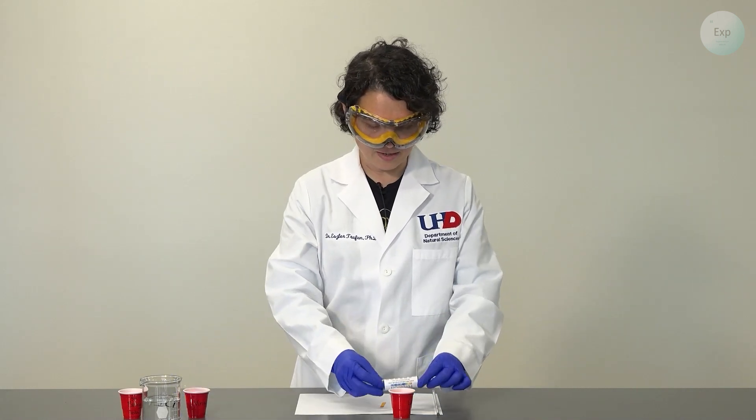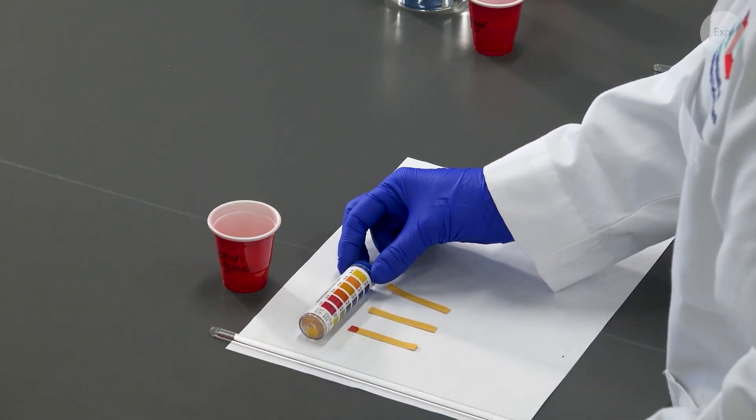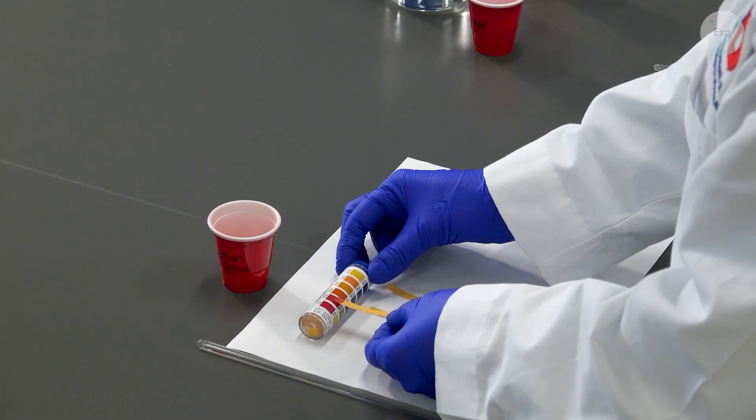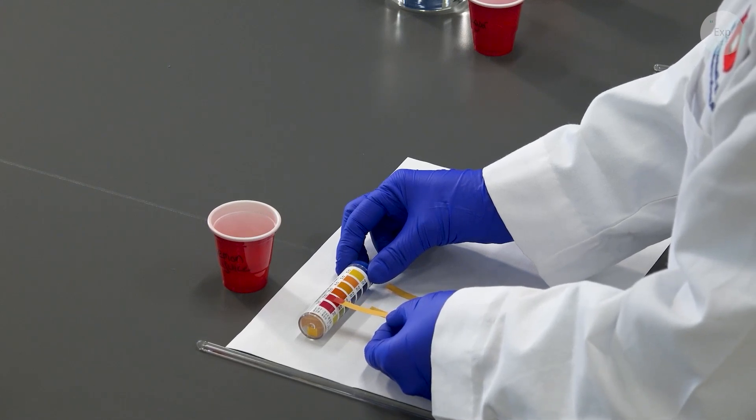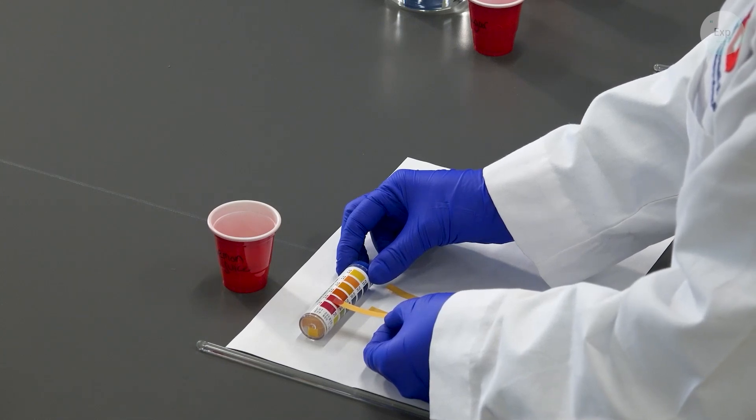And then I can take my pH scale, put it next to it, and I can find which color is most similar to the color response that I got by adding the drop of lemon juice. In this case it appears that the pH of lemon juice is about two.